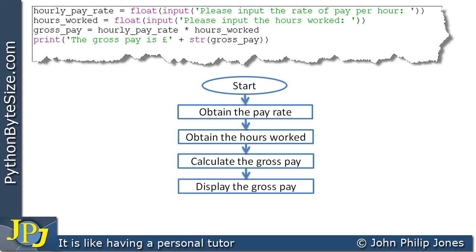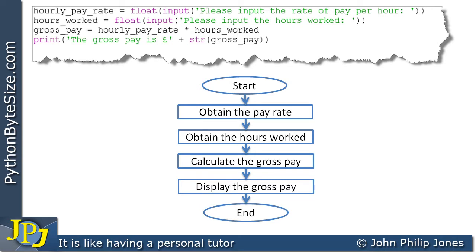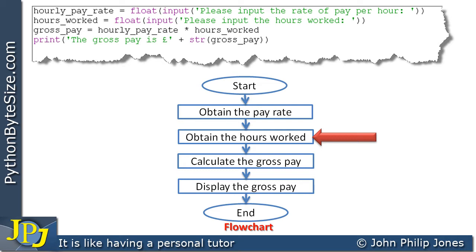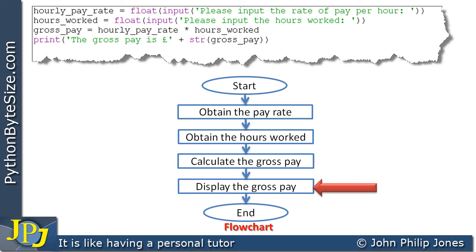Then we go on to the next step, calculate the gross pay, and finally we display the gross pay, and when we've done all of those steps we end the program. This flowchart shows the steps in that particular program. We start, obtain the pay rate, then obtain the hours worked — and we do that unconditionally — then we calculate the gross pay, unconditionally display the gross pay, and then we end.